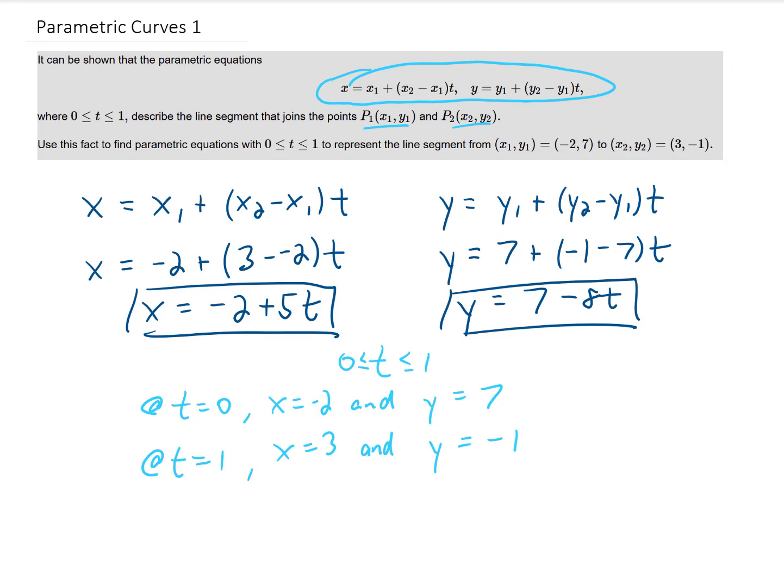So what does that tell us about these line segments? Well, this number and this number here give us our initial point, and this number here and this number here tell us how much that x and y value change between time equals 0 and time equals 1.